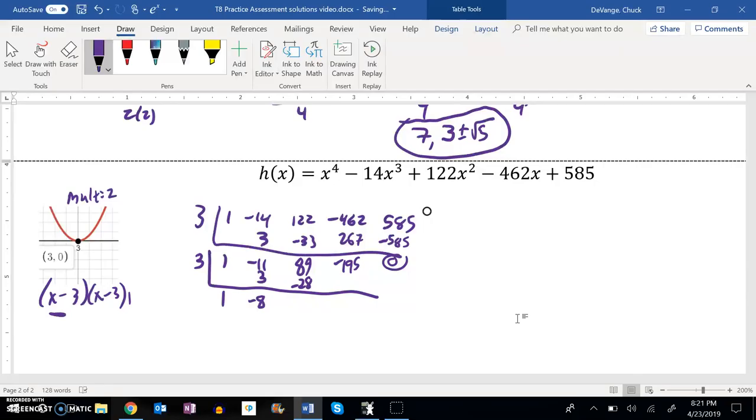add that to 89, 65, multiply by 3, 195. That gives me a 0. So I factor out x minus 3 twice, and I was left with an x squared minus 8x plus 65.